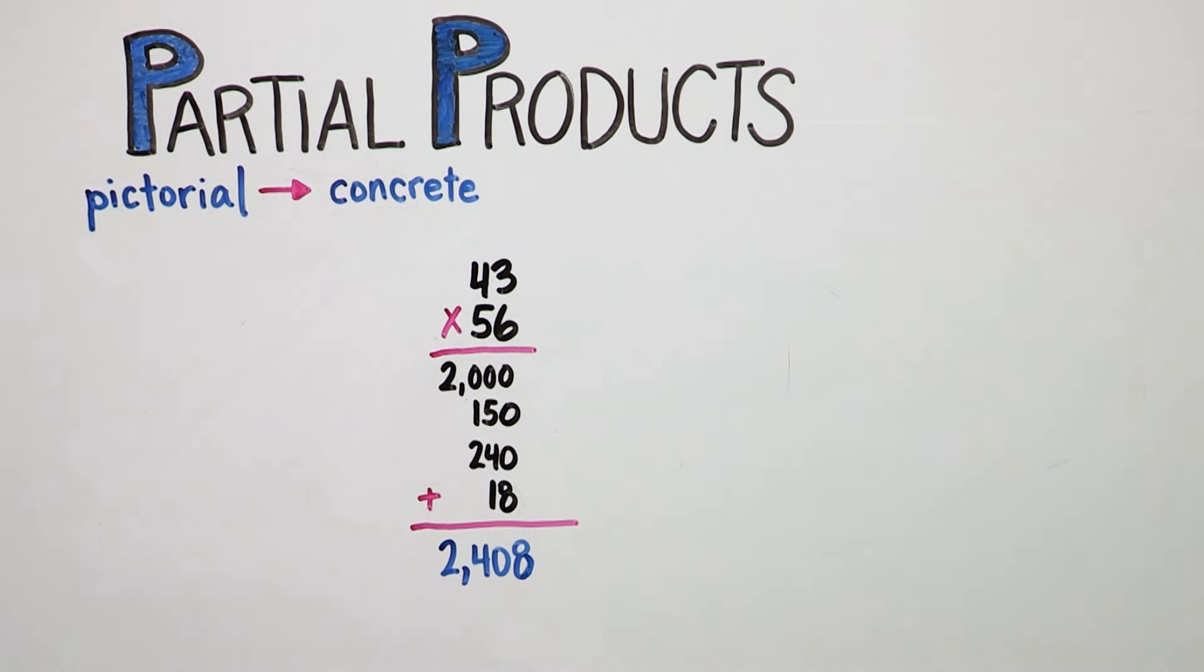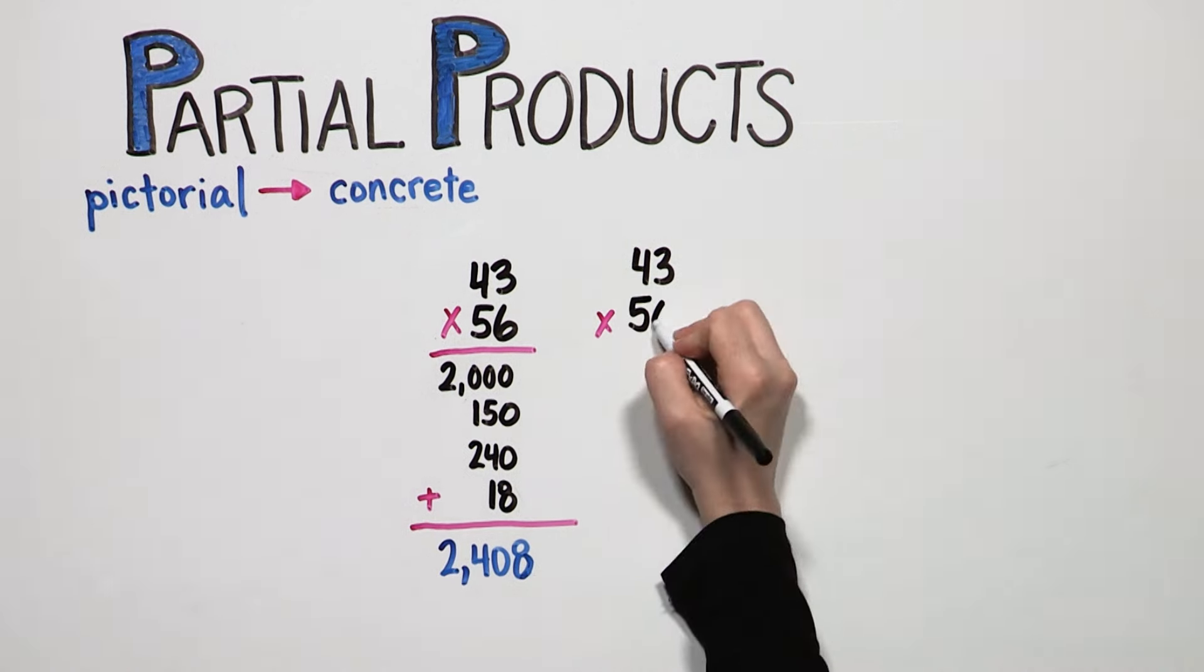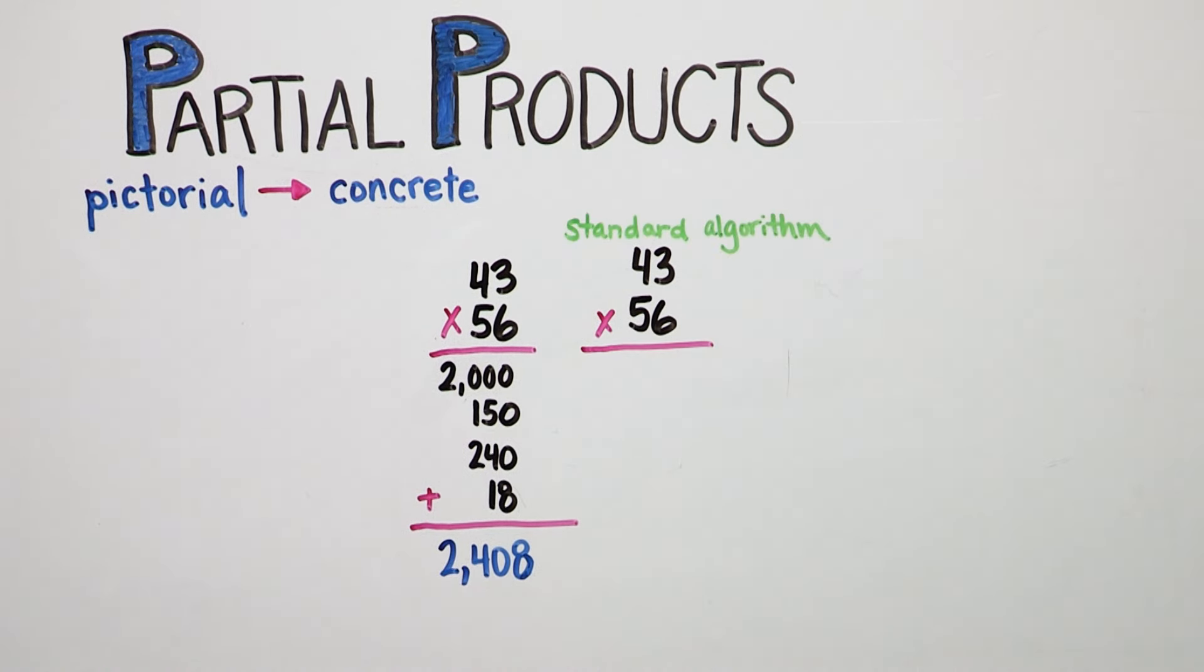By the end of fourth grade, your child will use the standard algorithm to multiply. This algorithm is used to develop an abstract level of understanding.